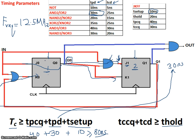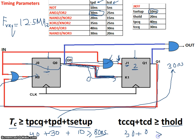Let's also verify that the hold time constraint is not violated. Of these three combinational paths, the shortest path is the direct wire from Q0 to K1, because there's no combinational element. The contamination delay of this path, assuming wires have zero delay, is zero. The minimum time through the flip-flop (tccq) is 30 nanoseconds. Since 30 nanoseconds is greater than the hold time of 20 nanoseconds, we do not have a violation.